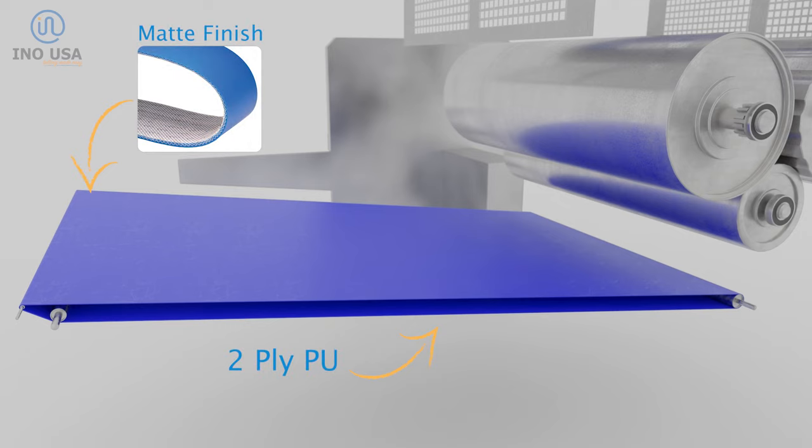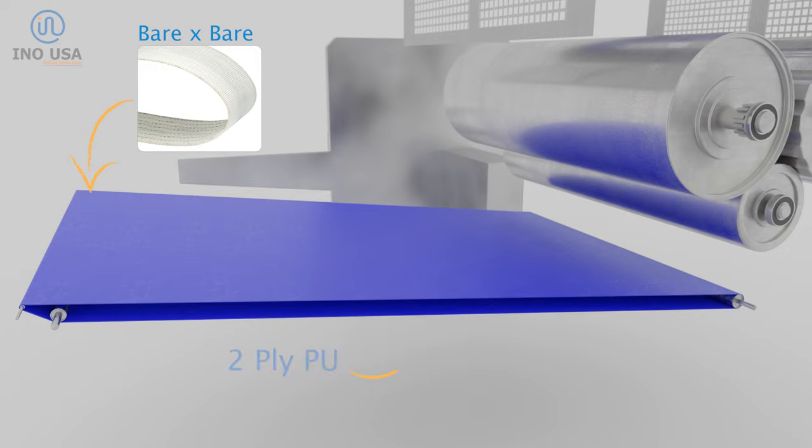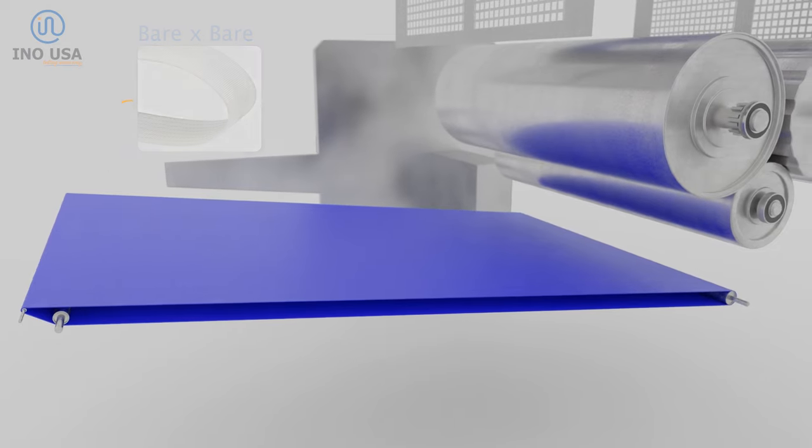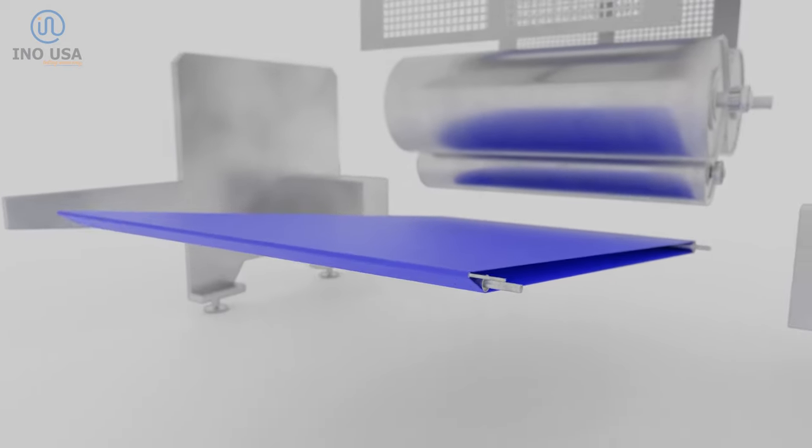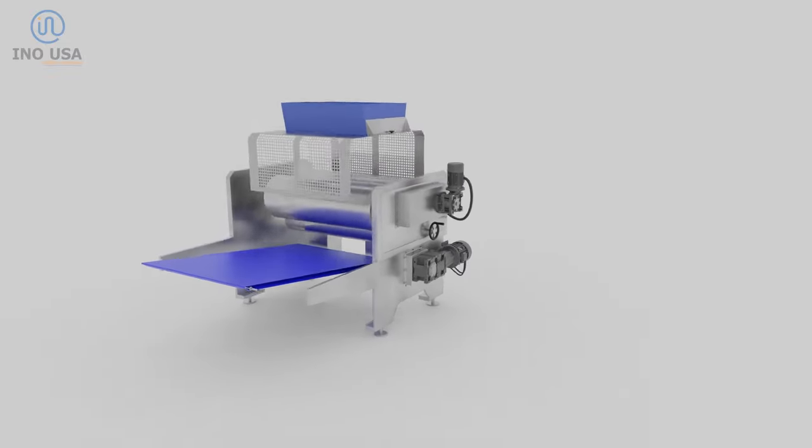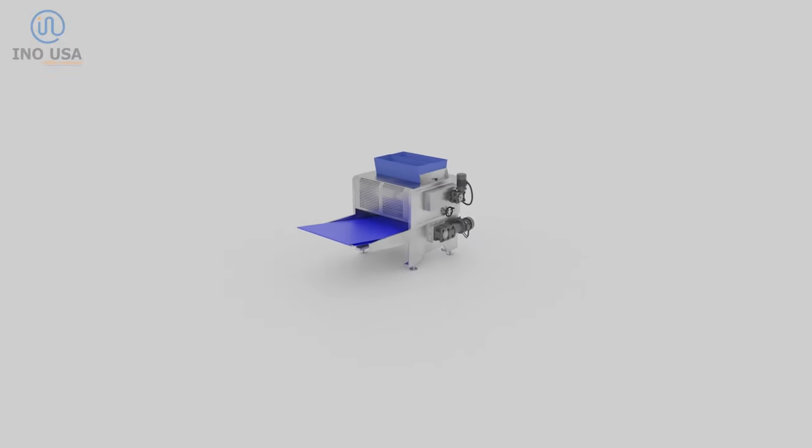If the dough is very sticky, a higher-release polyether-based polyurethane belt can be used as well. Some companies also use a bare-by-bare polyurethane belt. This means no covers, just the fabric. This type of belt can also provide good release by lowering the surface of contact of the belt with the dough.